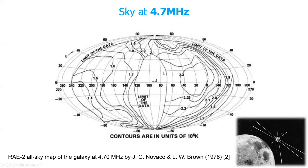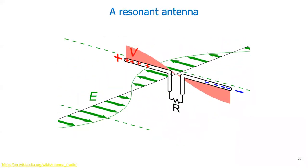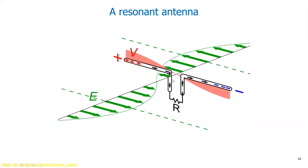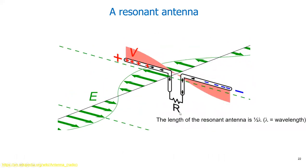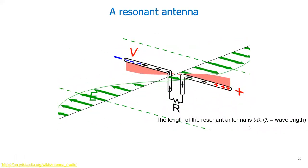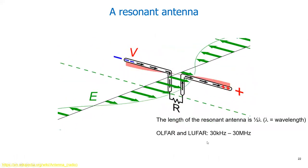If we look at antennas, we know that normally when we want to receive a signal we take a resonant antenna. This means the length of the antenna is half a wavelength. For radio telescopes like OLFAR and LOFAR.